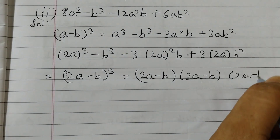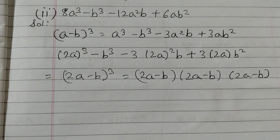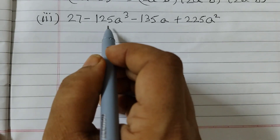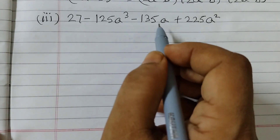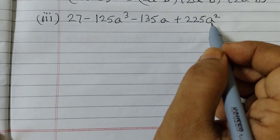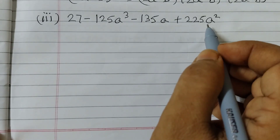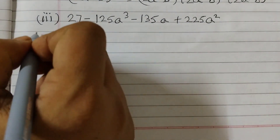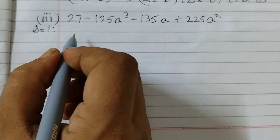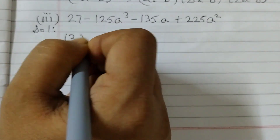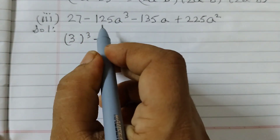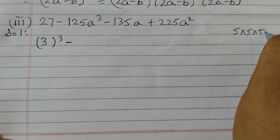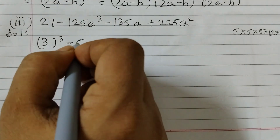The third one is 27 minus 125a³ minus 135a plus 225a². For this one we will use the identity of (a - b)³. You need to write the identity for each problem. So: 27 can be written as 3³.